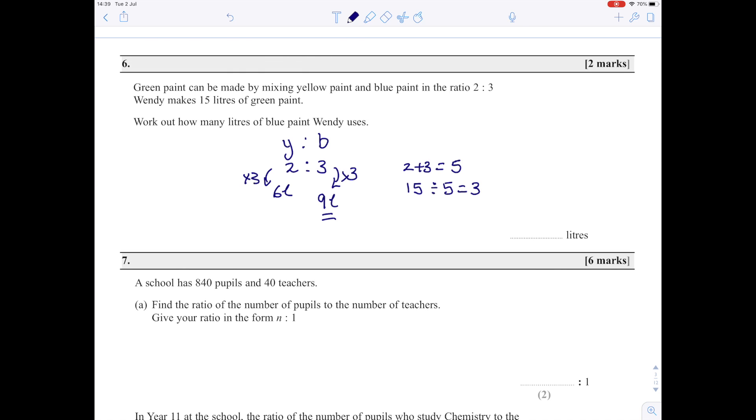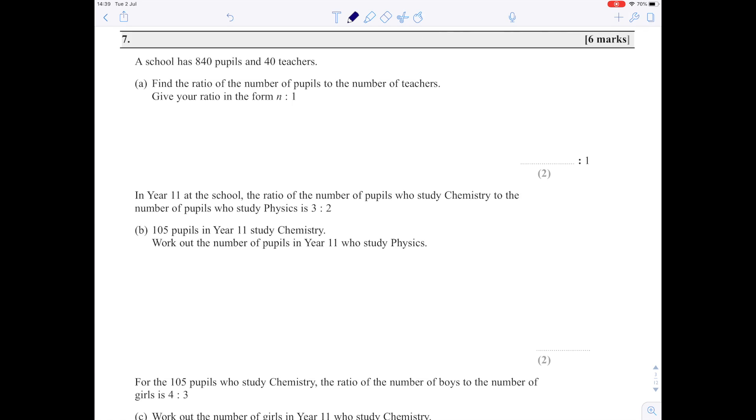Slightly longer question this time: a school has 840 pupils and 40 teachers. Find the ratio of pupils to teachers. Both of those will divide by 40. If I divide 840 by 40 I get 21, and 40 by 40 gives 1. So the ratio is 21 to 1, which is in the form n to 1 where n is 21.